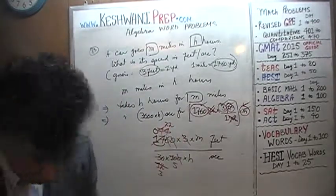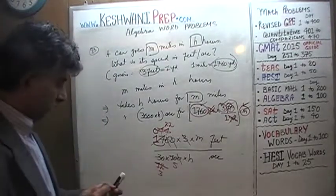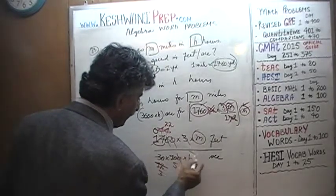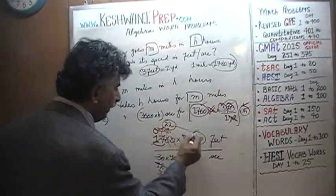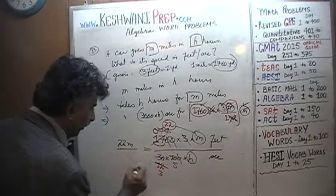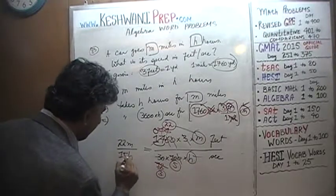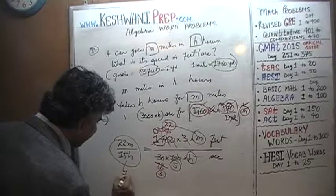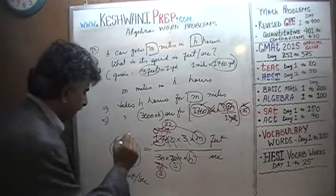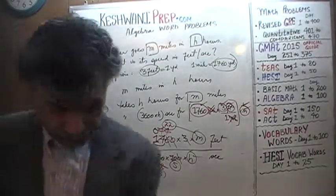So what do we end up with for our final answer? We need to pay attention and not forget the variables m and h. We have 22m on top over 3 times 5 which is 15h on the bottom. So the answer is 22m over 15h feet per second.